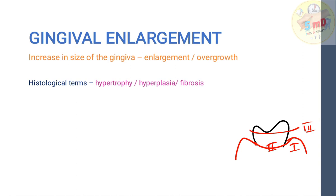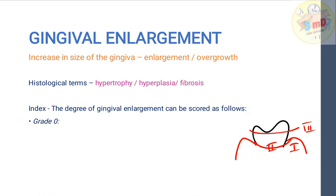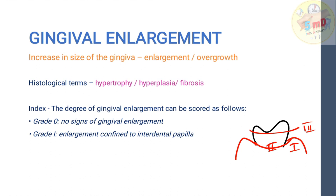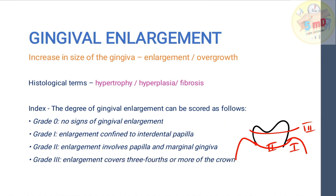The index for classifying gingival enlargement is scored as follows. Grade 0 shows no signs of gingival enlargement. Grade 1 shows enlargement confined to the interdental papilla. Grade 2 denotes enlargement involving the papilla and marginal gingiva. Grade 3 does not mean enlargement involving papilla, marginal gingiva, and attached gingiva — grade 3 denotes enlargement covering three-fourths or more of the crown.